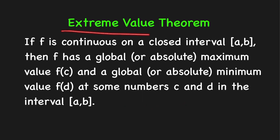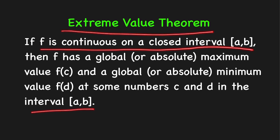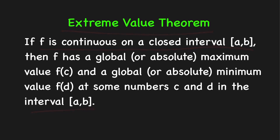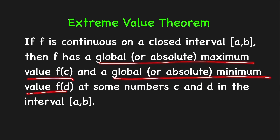Here's the Extreme Value Theorem. It tells us that if we have a function that is continuous on a closed interval [a, b], then this function has a global maximum and a global minimum in the interval [a, b]. So we can obtain a global or absolute maximum, say f(c), and a global or absolute minimum value, say f(d), at some numbers c and d in the interval [a, b].